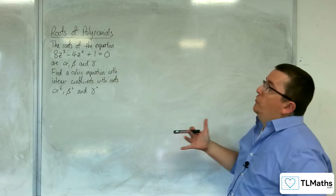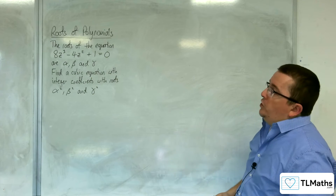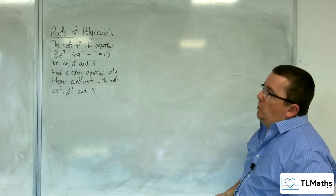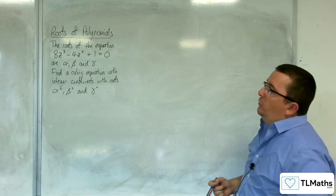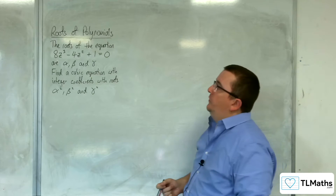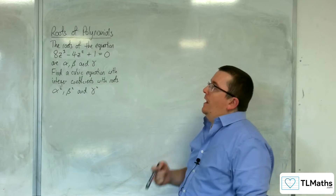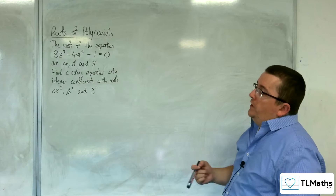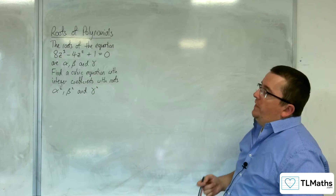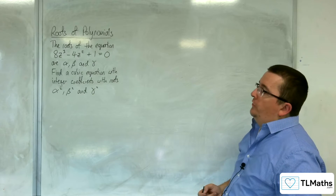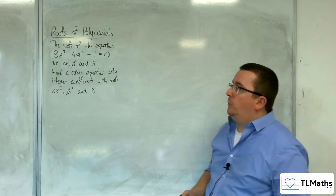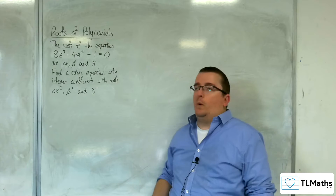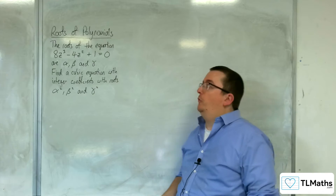In this video, the roots of the equation 8z cubed minus 4z squared plus 1 equals 0 are alpha, beta, and gamma. Find a cubic equation with integer coefficients with roots alpha squared, beta squared, and gamma squared.